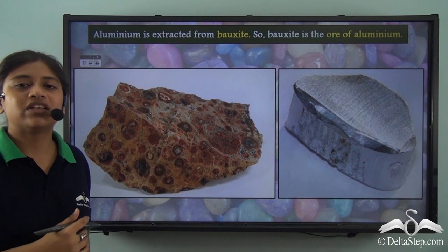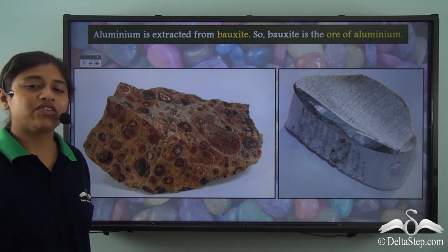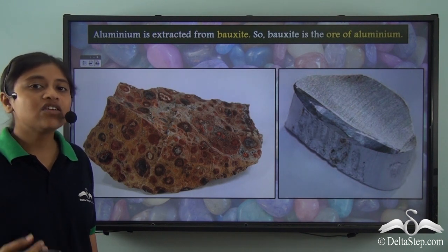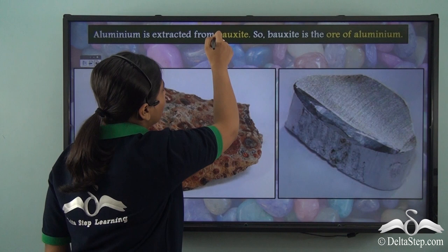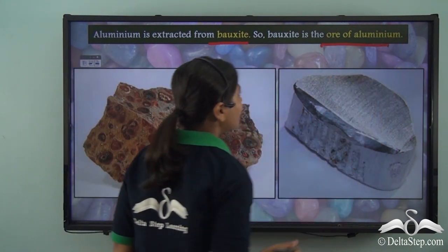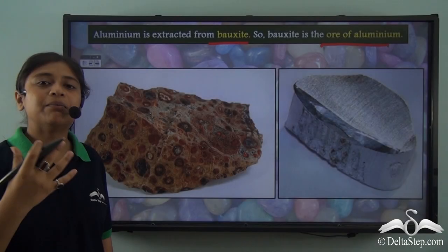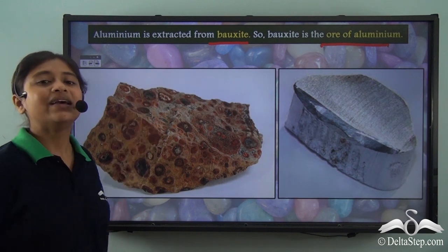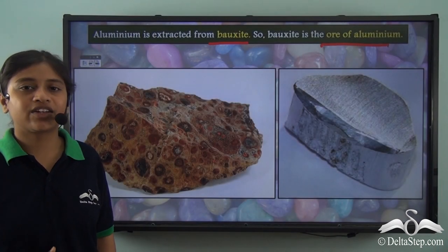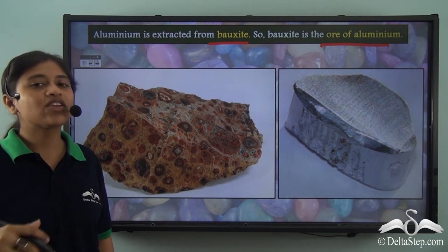Another example is aluminium, which can be extracted from its ore. Its ore is bauxite, so bauxite is the mineral ore of aluminium. Surprisingly, bauxite, being a mineral ore of aluminium, is itself a mineral. From this we can conclude that all ores can be minerals, but all minerals cannot be ores.